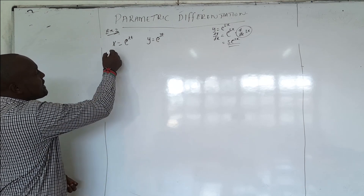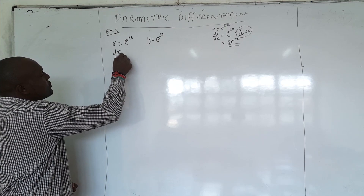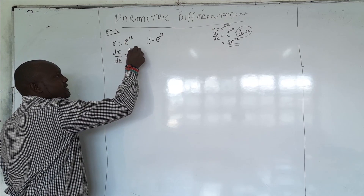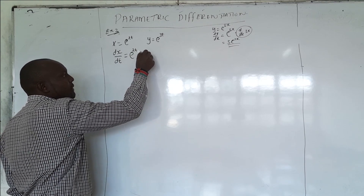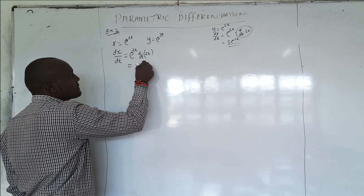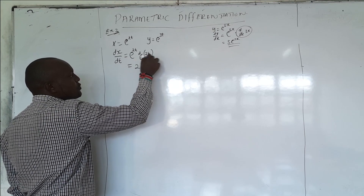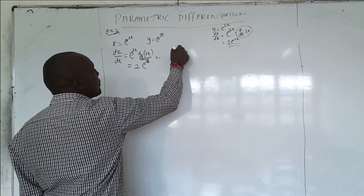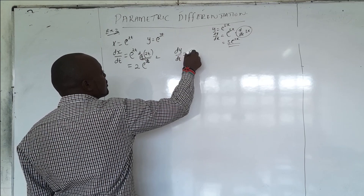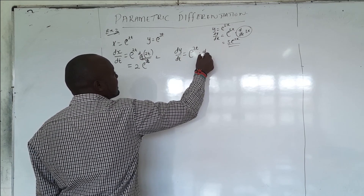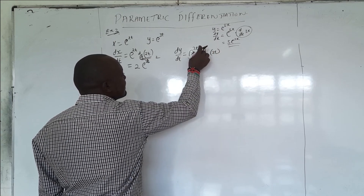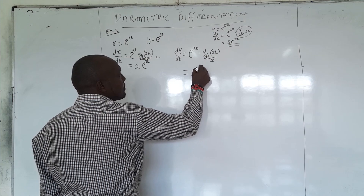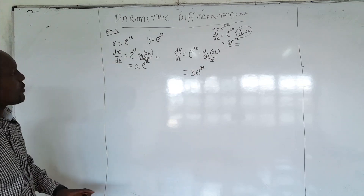Applying this to our example: differentiating x equals e to the power 2T with respect to T, the function remains and we differentiate the power 2T to get 2, so dx/dt equals 2e to the power 2T. For dy/dt, the function e to the power 3T remains and we differentiate the power 3T to get 3, so dy/dt equals 3e to the power 3T.